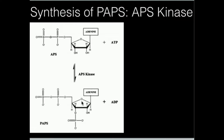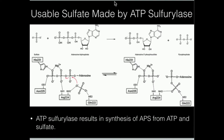You can see this is the ribose ring, this is an adenine. We actually have a 3-prime phosphate, and then on the 5-prime phosphate we have a sulfate attached there. So how do we make that?